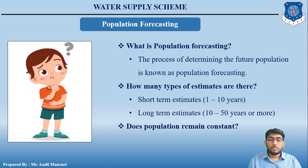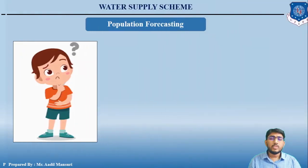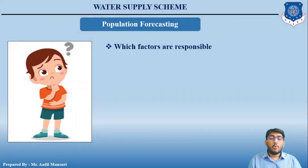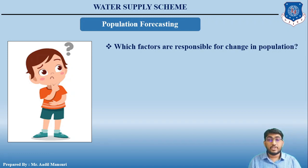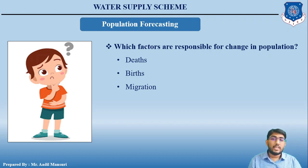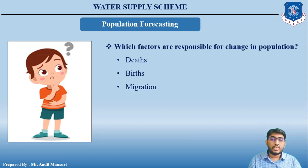Population does not remain constant — it changes constantly. The different factors responsible for change in population are: deaths, births, and migration. Since birth and death are natural processes, they are not in our hands. But migration is limited to economic opportunity. For example, if there are more job opportunities in a city compared to the countryside, people living in the countryside will migrate to city areas.